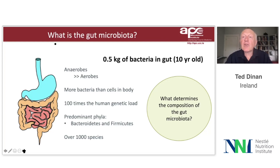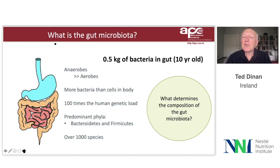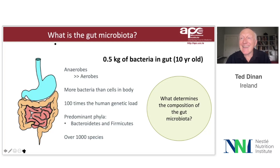In terms of the phyla of bacteria, the predominant phyla are Bacteroidetes and Firmicutes. And there are over 1,000 species present in your average 10-year-old child.